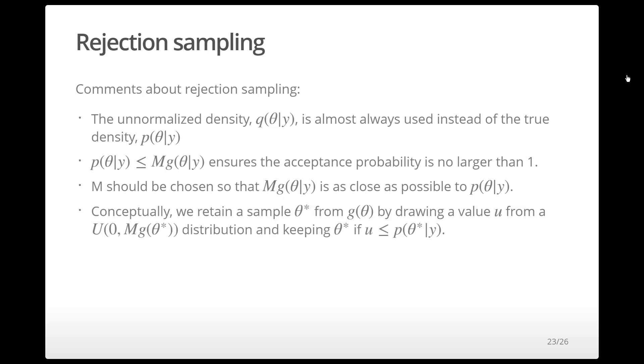When thinking about how to make the decision regarding whether the sample value theta star drawn from g should be retained, we draw a value u from a uniform 0 to mg theta star distribution and keep theta star if u is less than or equal to the target density evaluated at theta star.